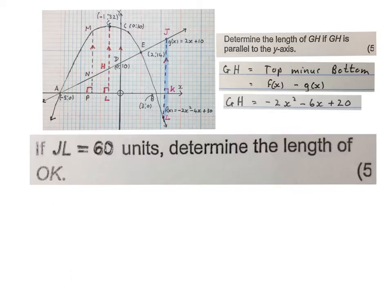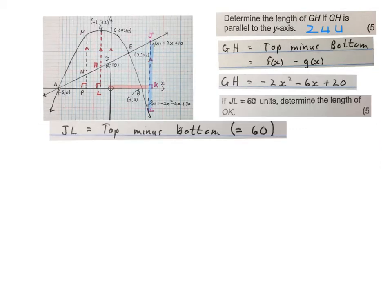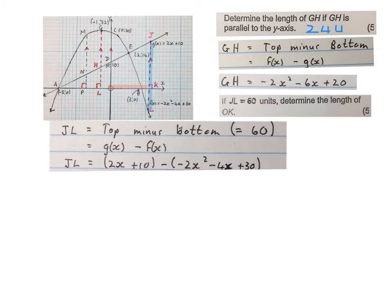The next question reads: if JL is 60 units, determine the length of OK. So they say if this blue line equals 60 units, how long is that red line from the origin to k? First we find an expression for the length of the blue line. We write JL equals top minus bottom, and JL is 60. At the top we now have the straight line. We have g(x) minus f(x). Fill in the expressions in brackets, simplify them, and here we have an expression for JL.